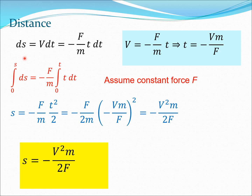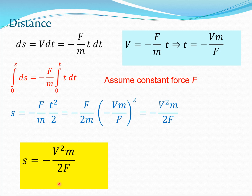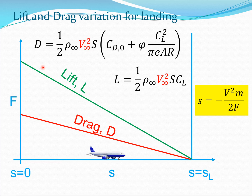Integrating the distance equation from 0 to s and 0 to t, and substituting t = -v_T·m/F, we obtain s = -v²·m/(2F). Again, since force is negative (decelerating), s is positive. This equation assumes constant force F. We can now use this to get a physical feel by plotting lift, drag, and friction forces against distance.